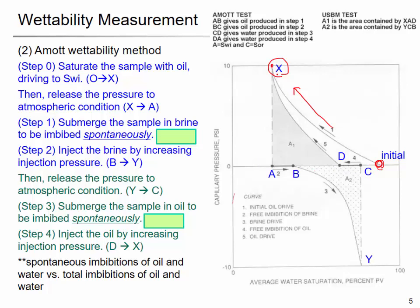At some point, the water saturation does not decrease anymore — that is the residual saturation, point X. Then you release the pressure to atmospheric pressure. Now the rock core is surrounded by oil, and you bring it to atmospheric pressure, so capillary pressure drops down and you have the initial water saturation.